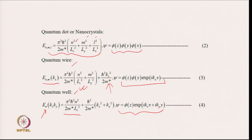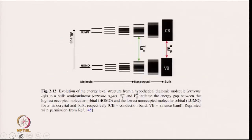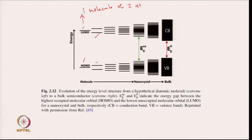This is the way you can model an electronic material. Now let us think about how the evolution of energy levels takes place from a hypothetical diatomic molecule to a bulk semiconductor. If there are two atomic orbitals which combine, they give two molecular orbitals — for example HOMO and LUMO — for one diatomic molecule.